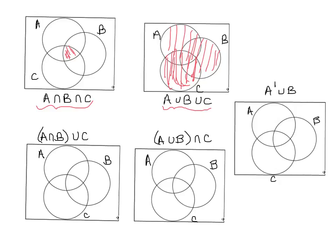As opposed to A union B union C, which is everything in A as well as everything in B as well as everything in C — all three circles combined. The unions are much easier, so I'll do the unions first and save the intersections for last.